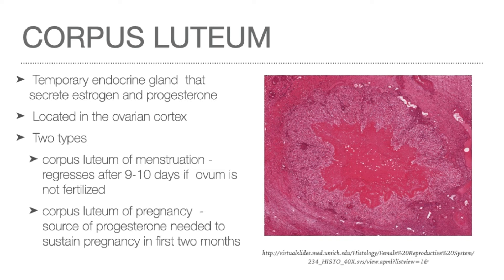After ovulation, the wall of the Graafian follicle collapses and becomes extensively folded. Blood vessels invade the previously avascular granulosa cell layer. The granulosa cells and theca interna cells hypertrophy, developing smooth endoplasmic reticulum and accumulating lipid droplets, transforming into lutein cells. By these changes, the follicle is transformed into a corpus luteum. There are two types: the corpus luteum of menstruation, which regresses in 9 to 10 days if fertilization does not occur, and the corpus luteum of pregnancy, formed when the oocyte is fertilized, lasting the first two months of pregnancy. It is an important source of progesterone and also secretes the hormone relaxin, which relaxes smooth muscle cells of the uterus, preventing contraction.